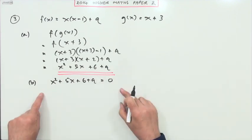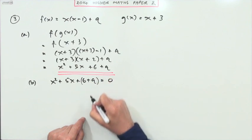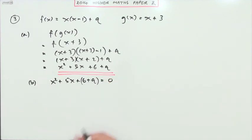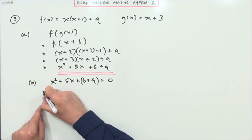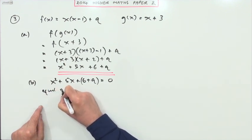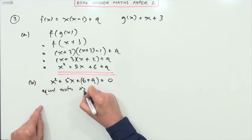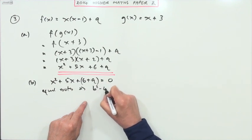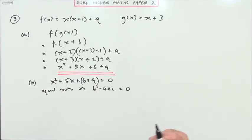I'll just emphasize that those two belong together as the constant in the end. So this equation will have equal roots if the discriminant b squared minus 4ac is equal to zero.